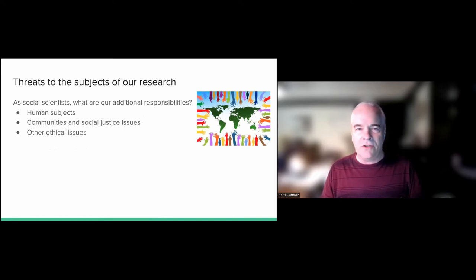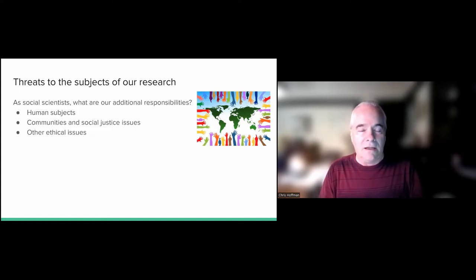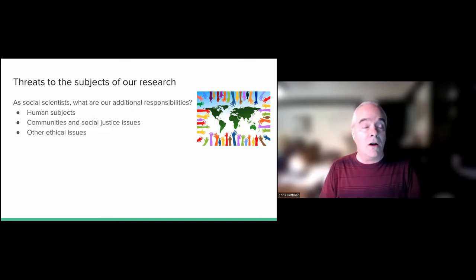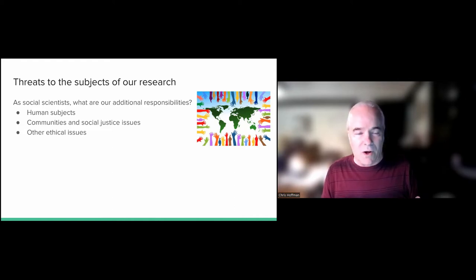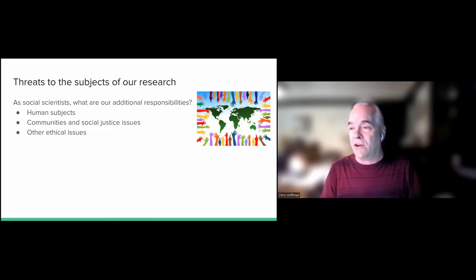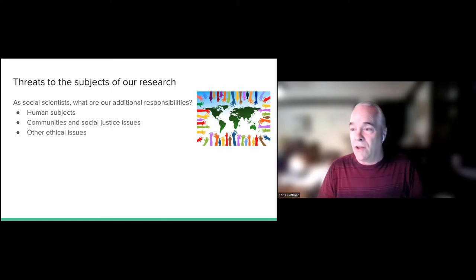As social scientists, we're also thinking about the threats to the subjects of our research — the communities and social issues that we're actually studying. For many social scientists, human subjects is a very real issue. Perhaps you've had to develop an IRB protocol for your research, and in that you've probably had to talk about risk to subjects and how you're going to protect them, including their data. As social scientists, we're dealing with very complex issues around communities and social justice. We have certain additional responsibilities beyond other kinds of research.